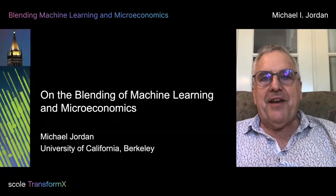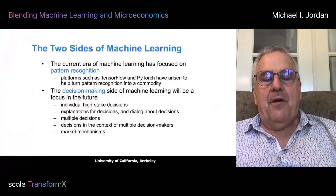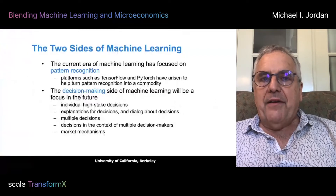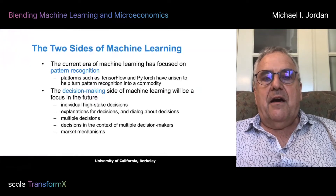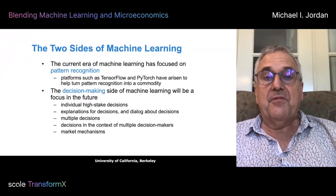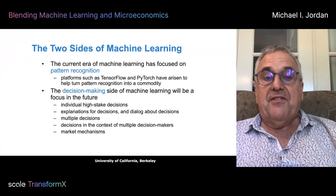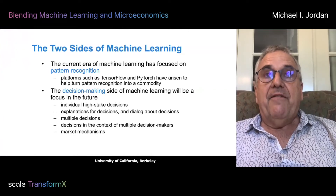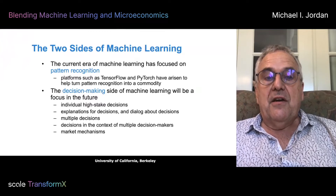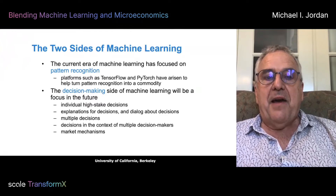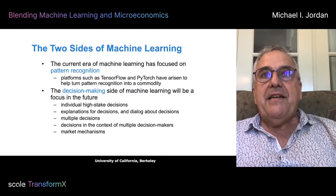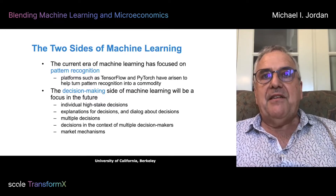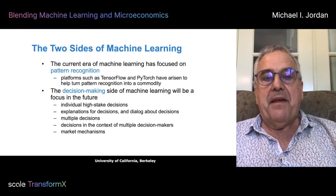Why should we be interested in microeconomics meets machine learning? Machine learning is a broad field, but it has two main sides to it. One is the pattern recognition side, and the other is the decision-making side. Pattern recognition has been the focus of a lot of work, a lot of the software platforms, and a lot of the business models in the past few years. It's become a commodity via systems such as TensorFlow and PyTorch, but it's also important to recognize the limitations of pattern recognition. That's an older terminology from the 60s and 70s, but already then there was gradient descent algorithms on datasets, and what's happened in the intervening 30 years is really just things have gotten bigger and faster.